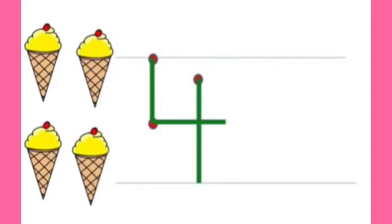How many ice creams are there? Yes, there are 4 ice creams. So let's begin writing number 4. Number 4 has 3 lines: 2 standing lines and 1 sleeping line. So starting from small standing line, and then we will make a sleeping line. Then again we will make a standing line.